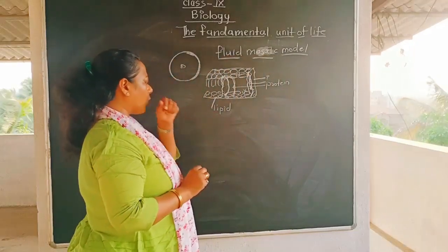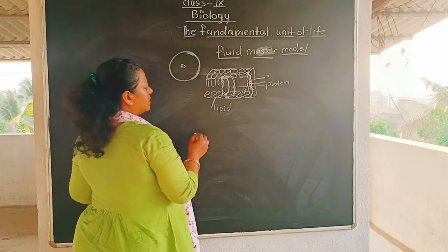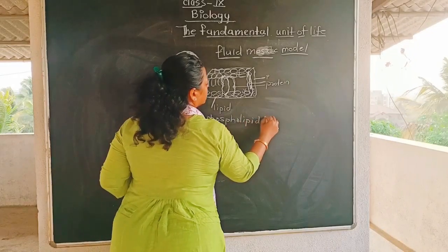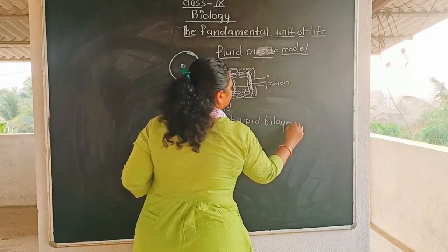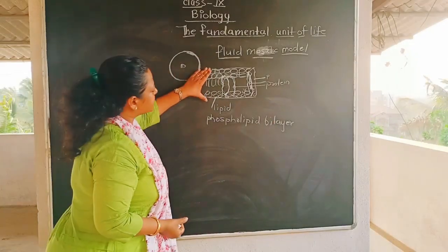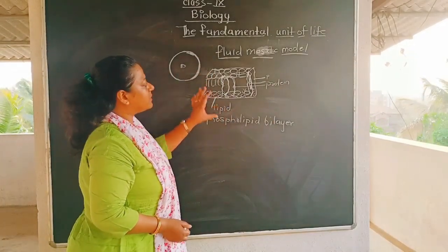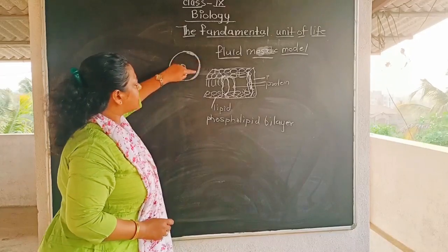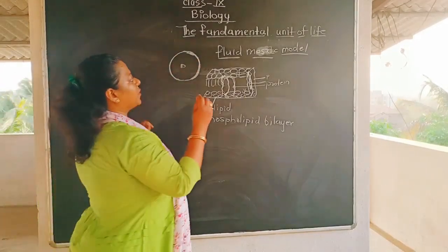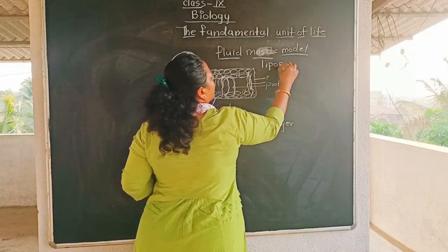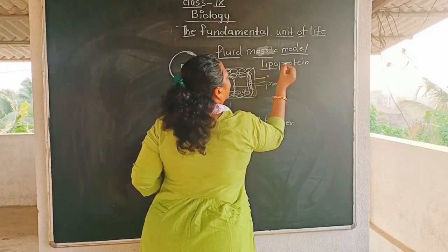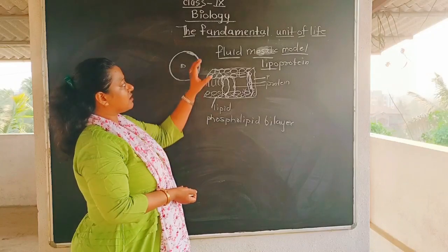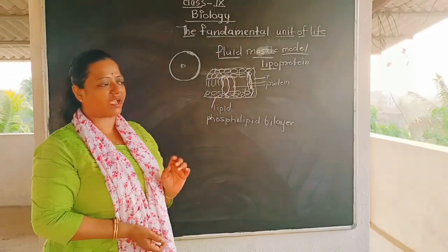This structure is called the fluid mosaic model. These two layers are called the phospholipid bilayer — why bilayer? Because two layers are there. The cell membrane is composed of lipoprotein: lipo stands for lipids and protein stands for this protein. This is the fluid mosaic model, which you will learn in detail in higher classes.